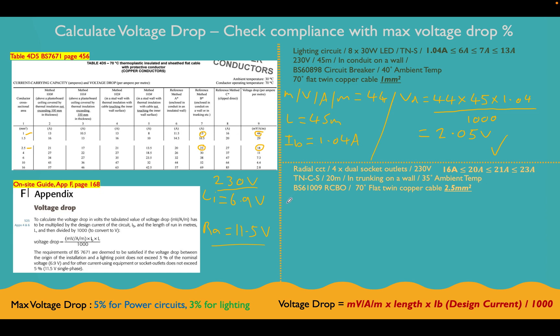Right, let's do this side now. So let's go again. So the millivolt amps per meter value for this one is 18. And then the length of our circuit for this radial circuit is 20 meters. And the design current for this circuit was 16 amps. That was our assumed load, 16 amps. So let's put a line straight across there. Let's go for this now.